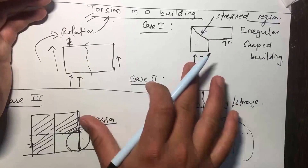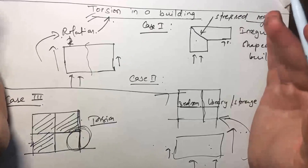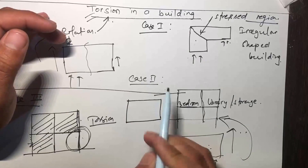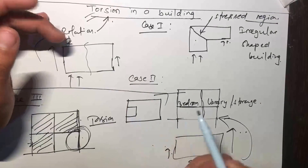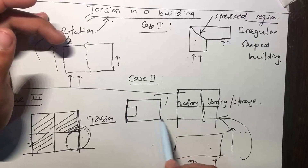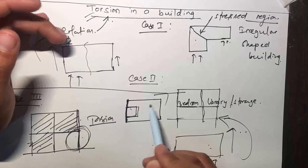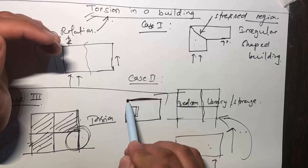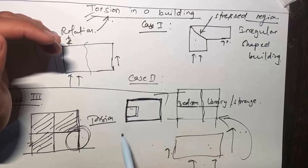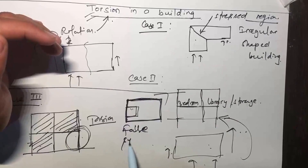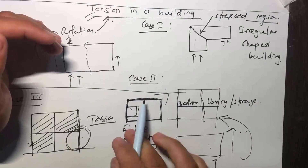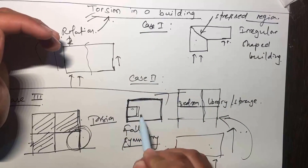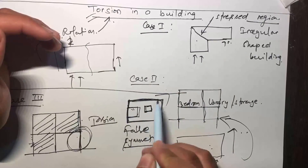For regular or symmetrical buildings, we can overcome torsion issues. However, even in a regular-looking building, if you have a staircase void on one edge and shear walls on one side but not the other, this is called false symmetry. The building still suffers from torsion despite appearing symmetrical. Best practice is to place staircases at the middle portion of the building to maintain regularity in shape.